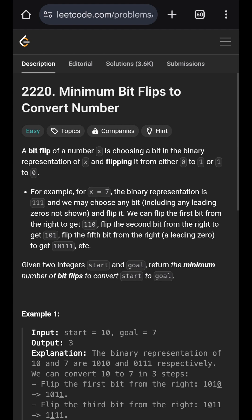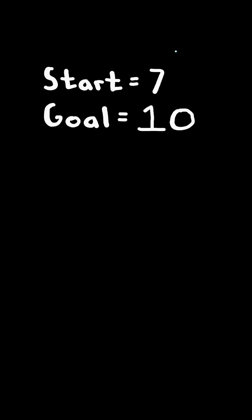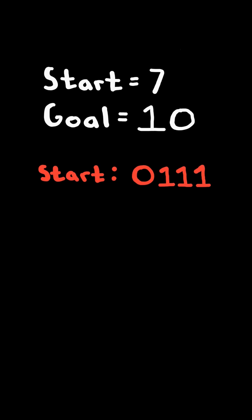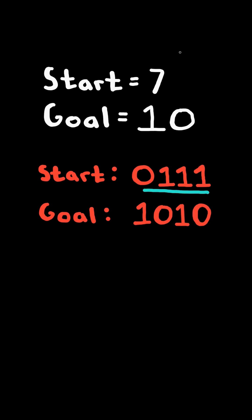Minimum bit flips to convert number. Given two integers start and goal, consider the binary representation of start and the binary representation of goal. We want to flip bits in start and make it equal to goal.